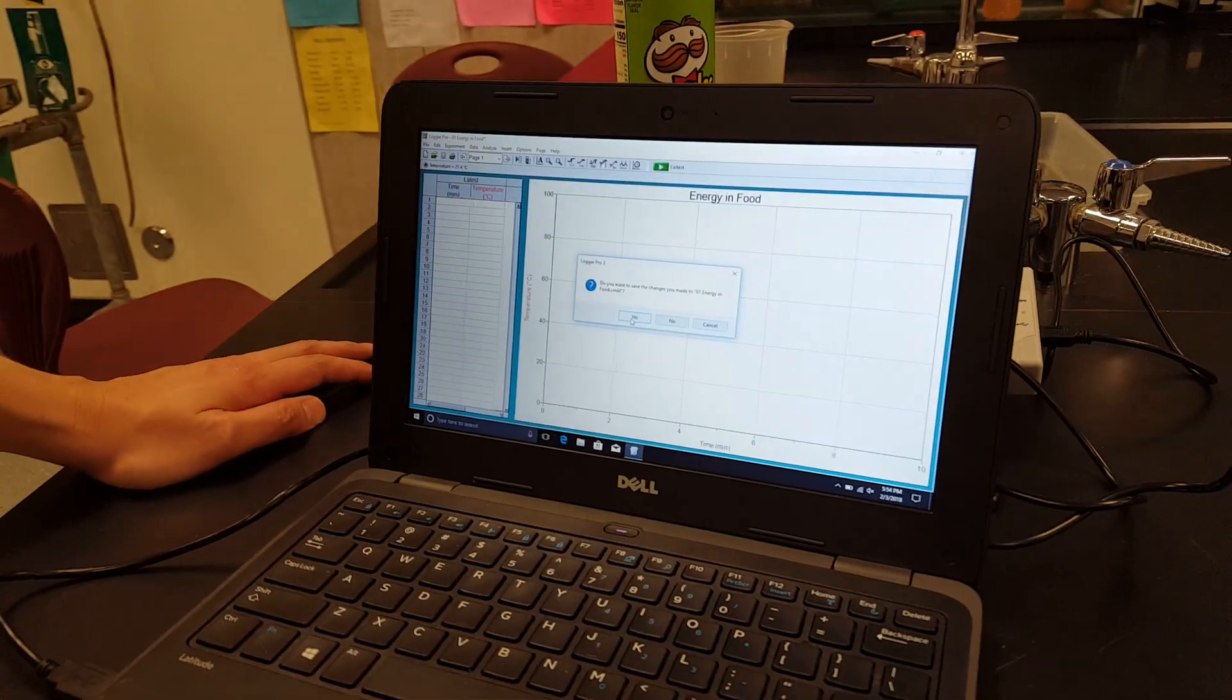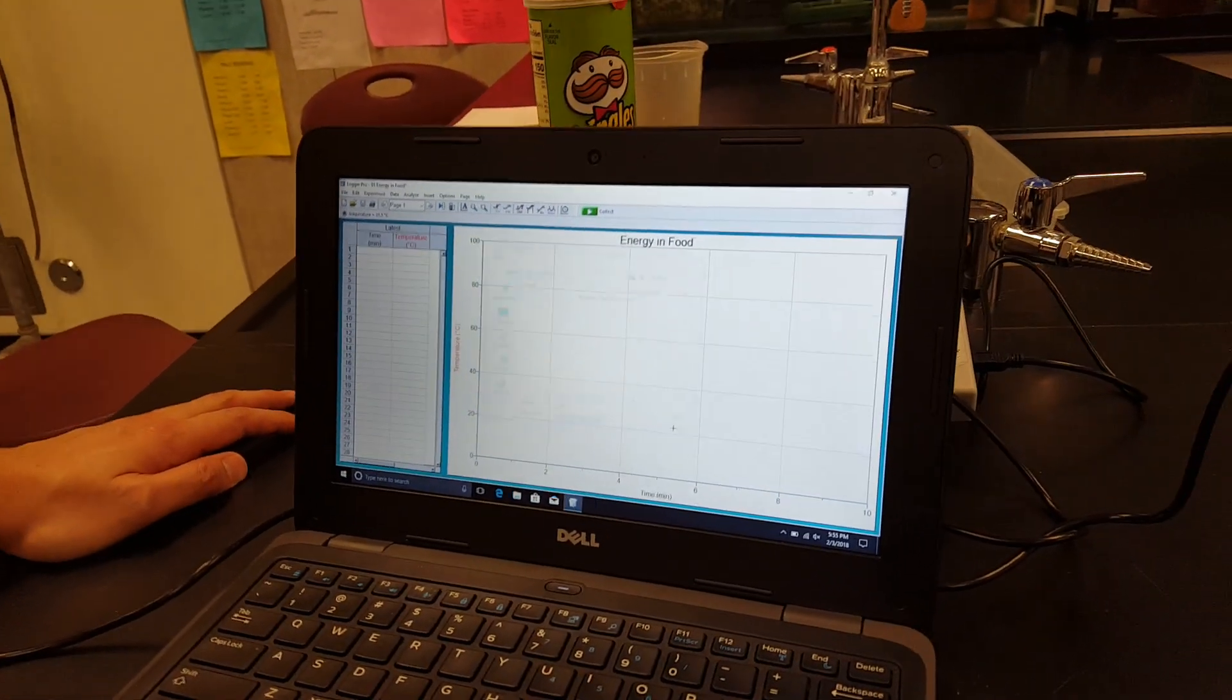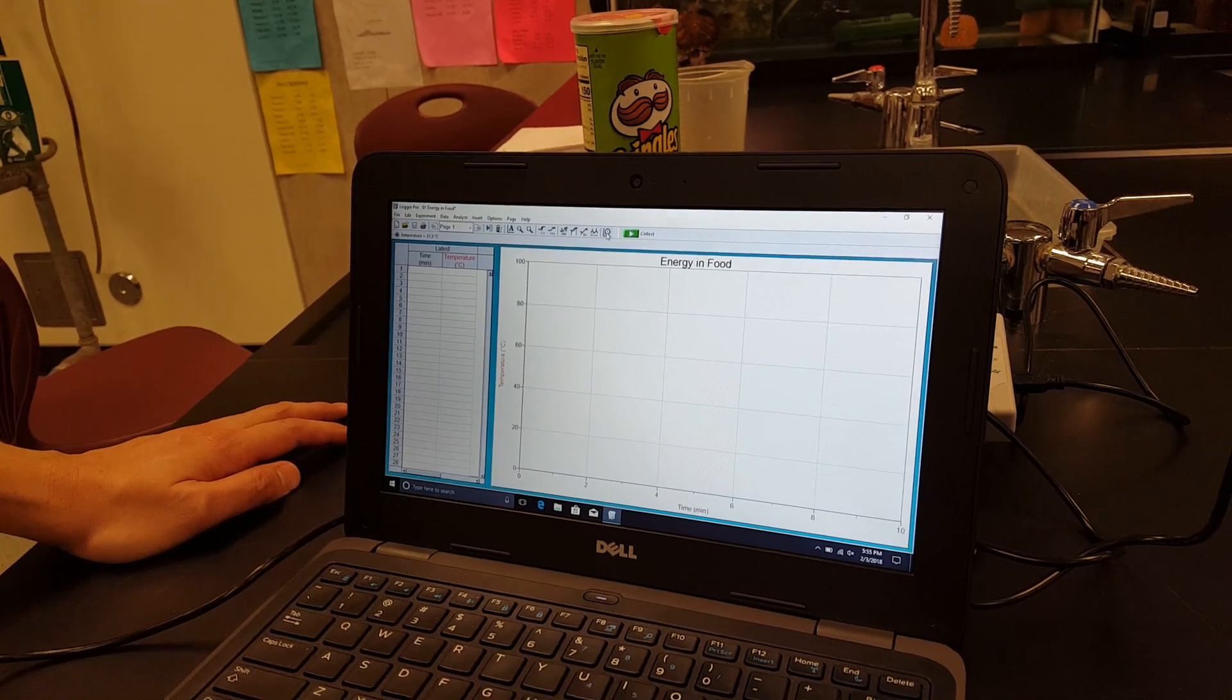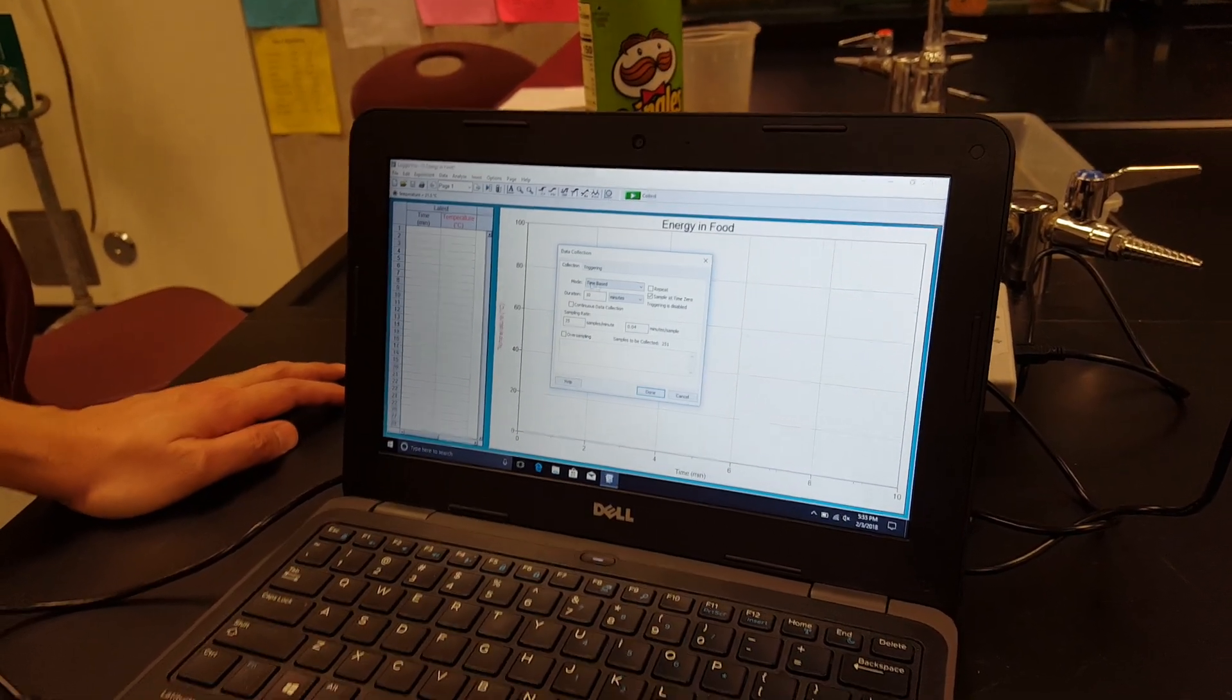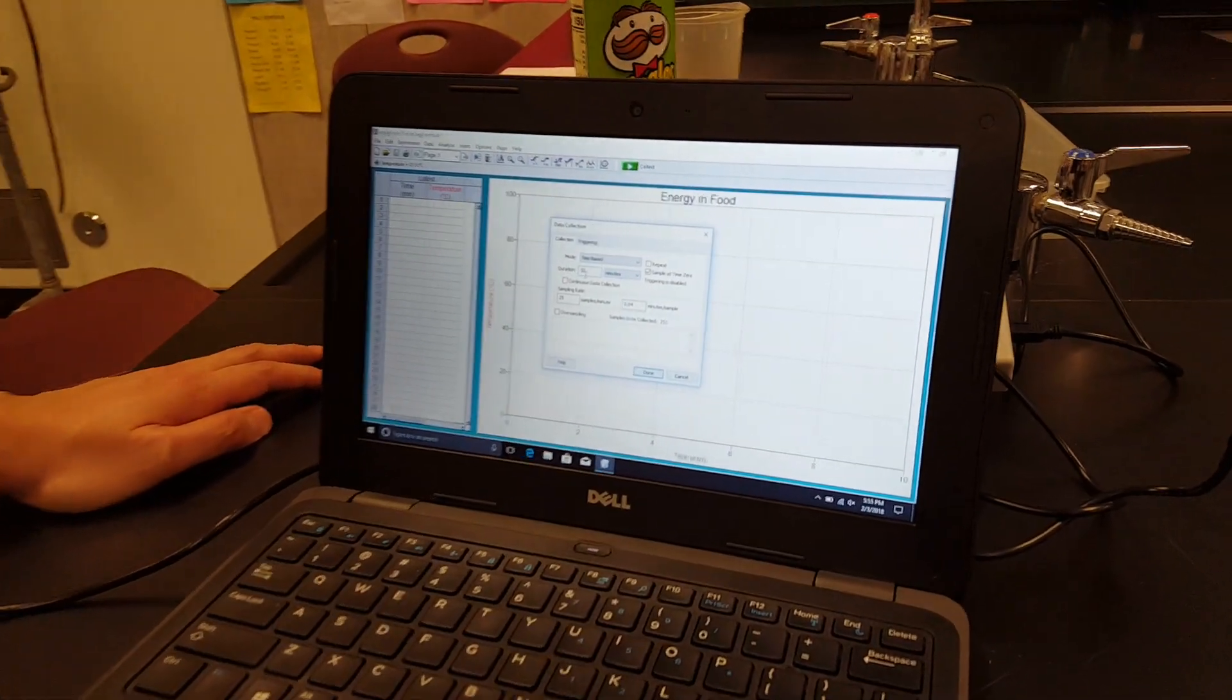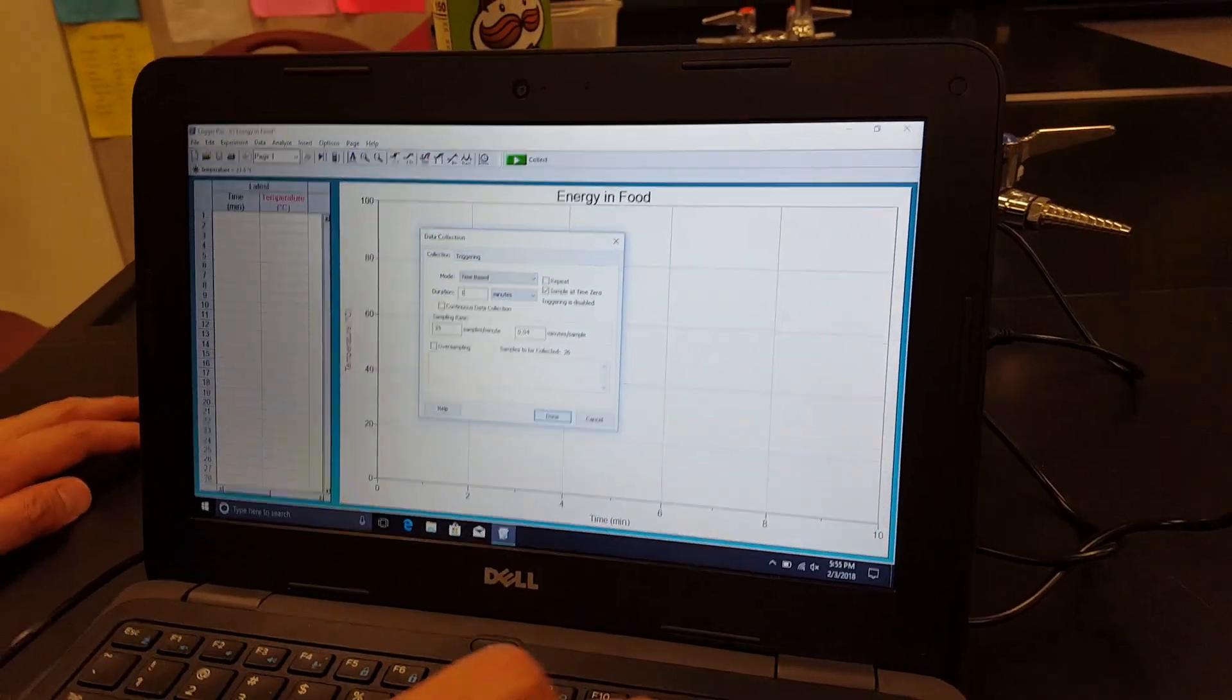And then just click yes or whatever. And then you want to go to where this stopwatch icon is. Click on it. And you want to make sure that it's at 10 minutes, the duration right here. If it's not at 10 minutes, just change it to 10 minutes.